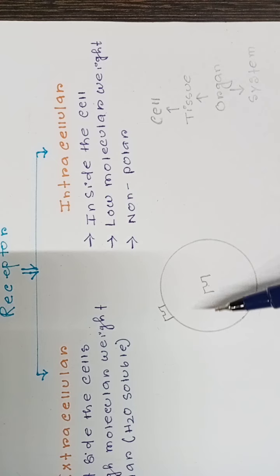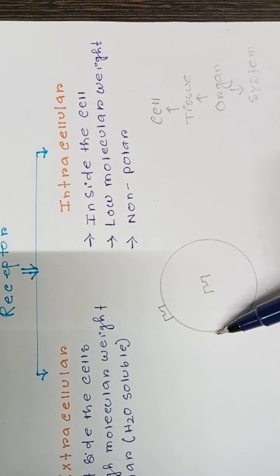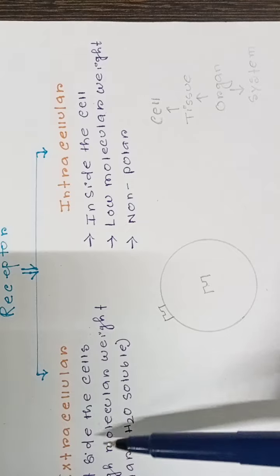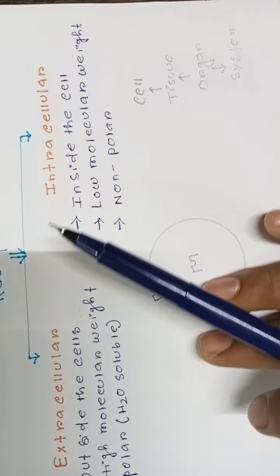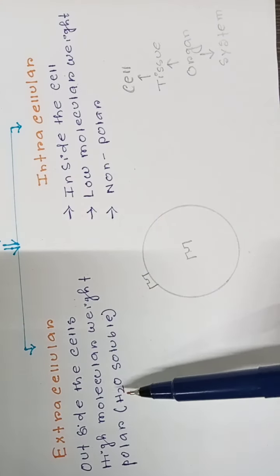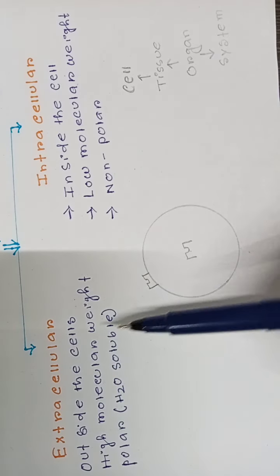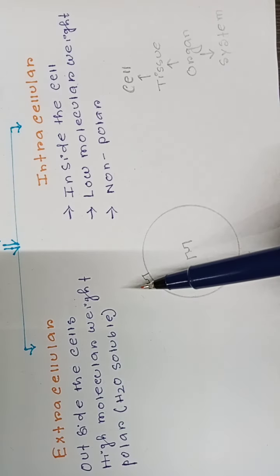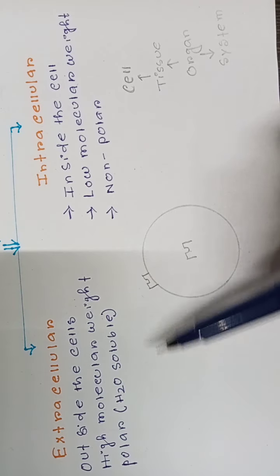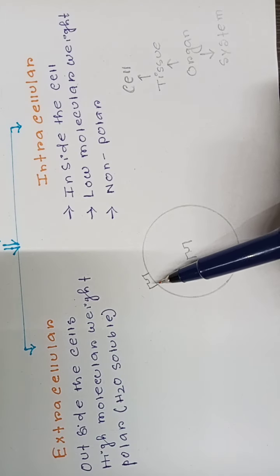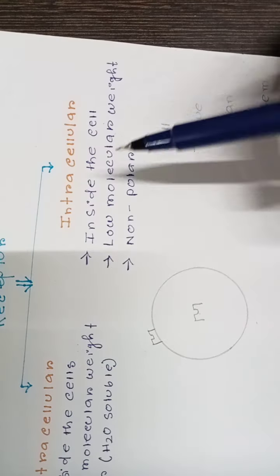This membrane here is called the cell membrane, and this cell membrane contains phospholipid. Extracellular receptors bind high molecular weight compounds — if any compound has a high molecular weight, it will bind to the extracellular receptor. Also, if the compound is polar, it should bind to the extracellular receptor.